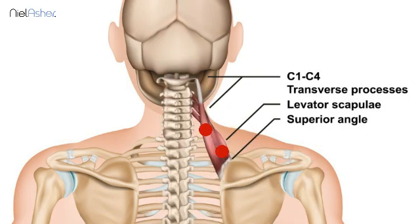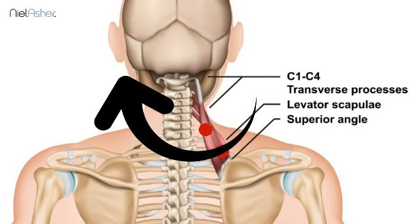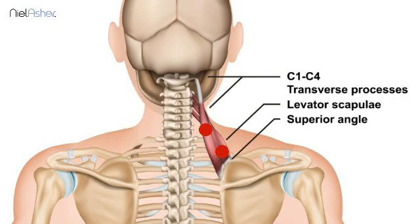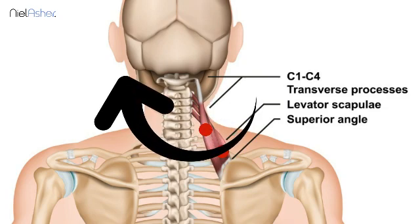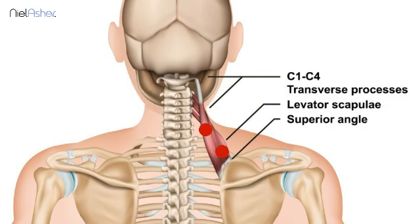One of the major symptoms that you get, apart from pain, is a feeling of stiffness. When the levator scapulae has trigger points in it, you have great difficulty rotating your head to the side of the levator scapulae itself. So if it's on the right-hand side, you have difficulty turning your head around. This is a classic — when somebody has pain in this area, they'll find that if they go to reverse the car, they'll turn their whole shoulders to get around to look behind.